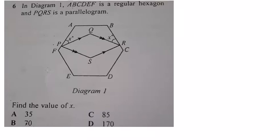Hello everybody, today I will talk about geometry. In diagram one, ABCDEF is a regular hexagon and BQRS is a parallelogram. We need to find the value of x. I will show you the technique how to answer.